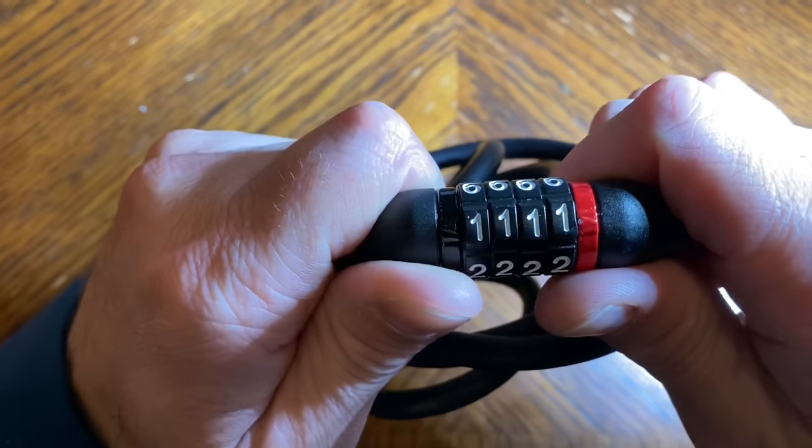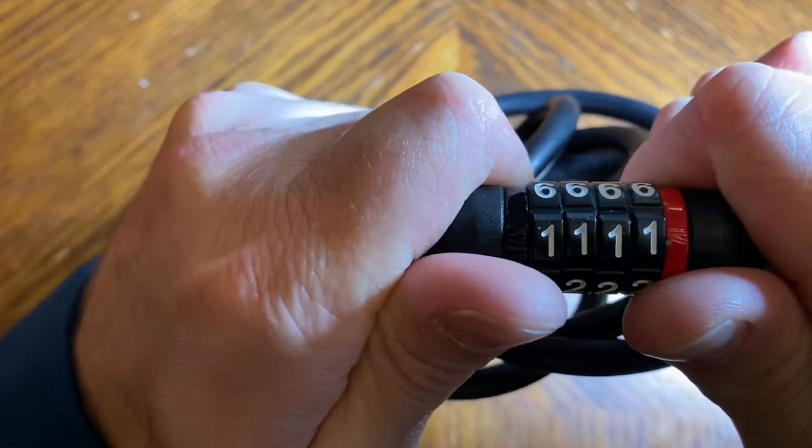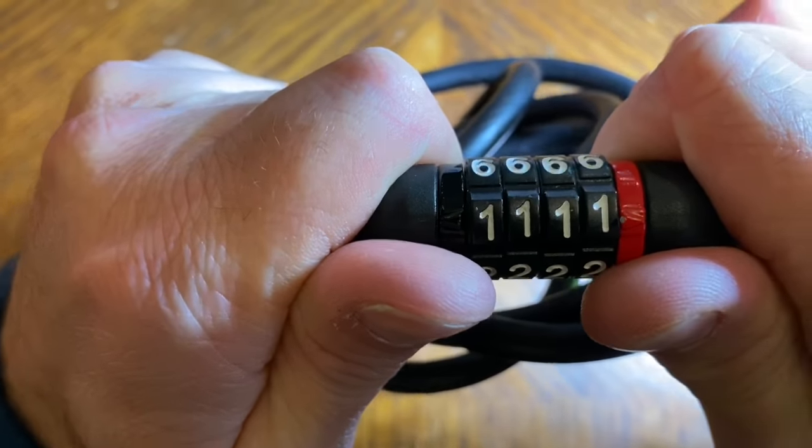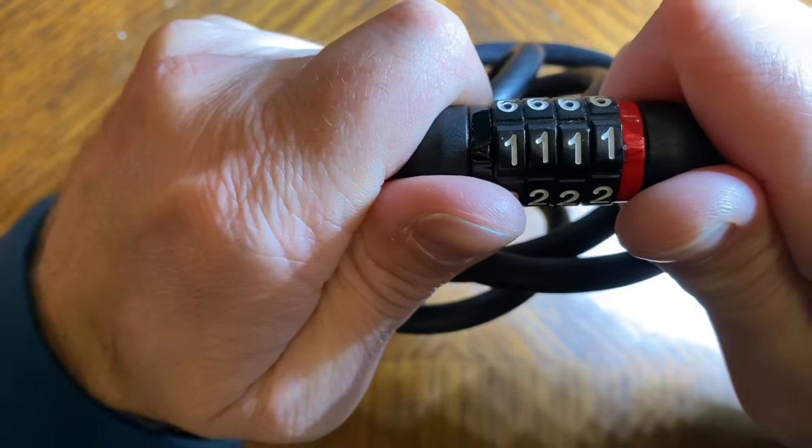When you have the correct number, there can be some separation between the numbers. See here, if I'm pulling the lock out, there can be a slight gap between the numbers.